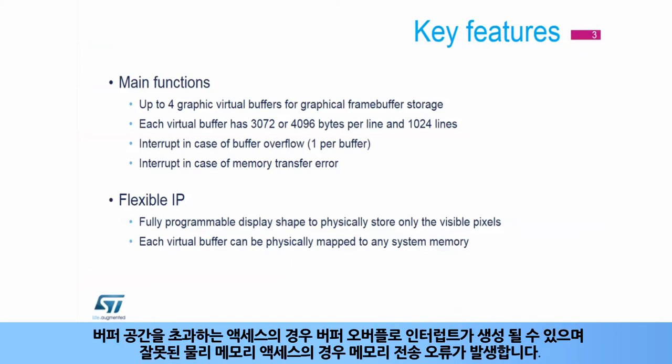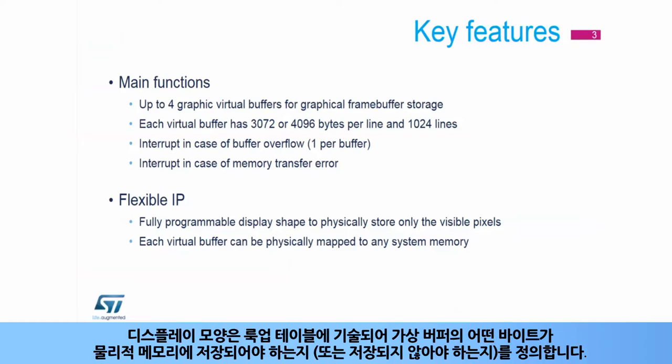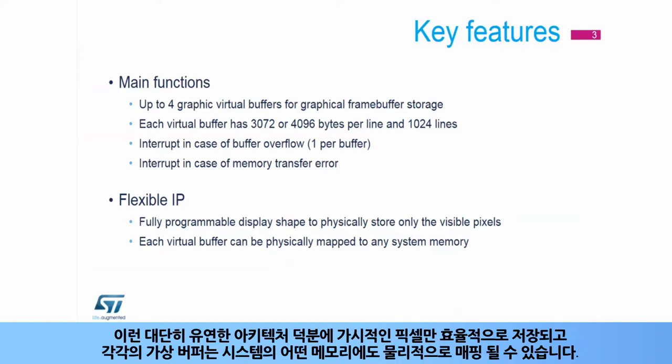In case of accesses exceeding the buffer space, a buffer overflow interrupt can be generated, and in case of a wrong physical memory address, a memory transfer error is generated. The display shape is described in a lookup table to define which bytes of the virtual buffer have to be stored or not in physical memory. Thanks to this very flexible architecture, only the visible pixels are effectively stored, and each virtual buffer can be physically mapped to any memory of the system.